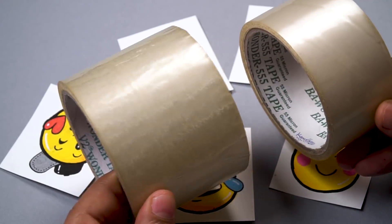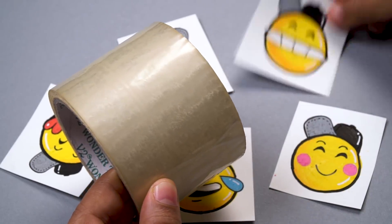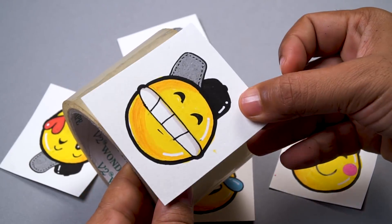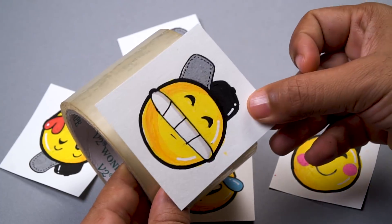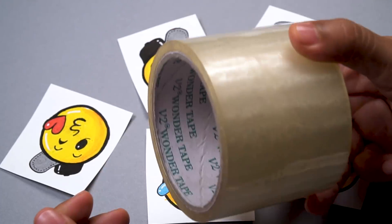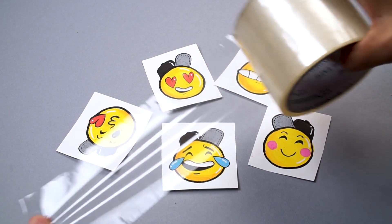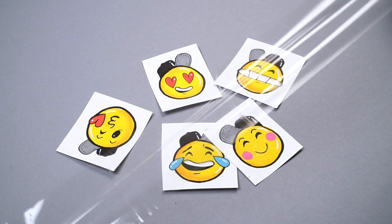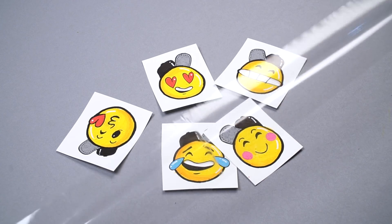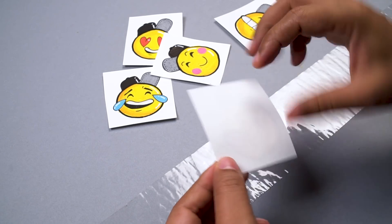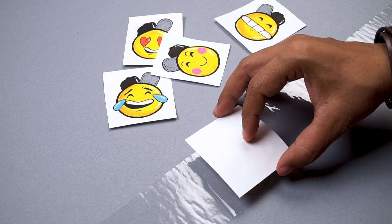So you can use a tape that is appropriate to the size of your emoji. Now we will take a long piece of tape and place it like this with the sticky side up. You can see this is the sticky side up. Now I will take one of the stickers and flip it and stick it face down.